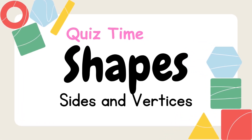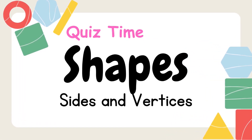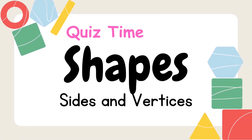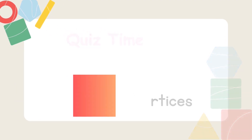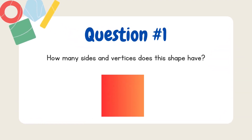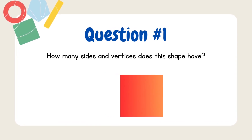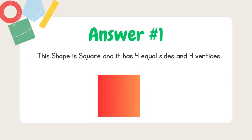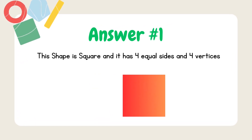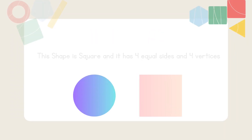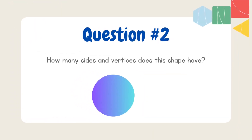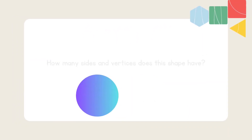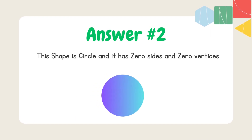Twist time! Now we play a game based on shapes, number of sides, and vertices. How many sides and vertices does this shape have? This shape is a square and it has four equal sides and four vertices. How many sides and vertices does this shape have? This shape is a circle and it has zero sides and zero vertices.